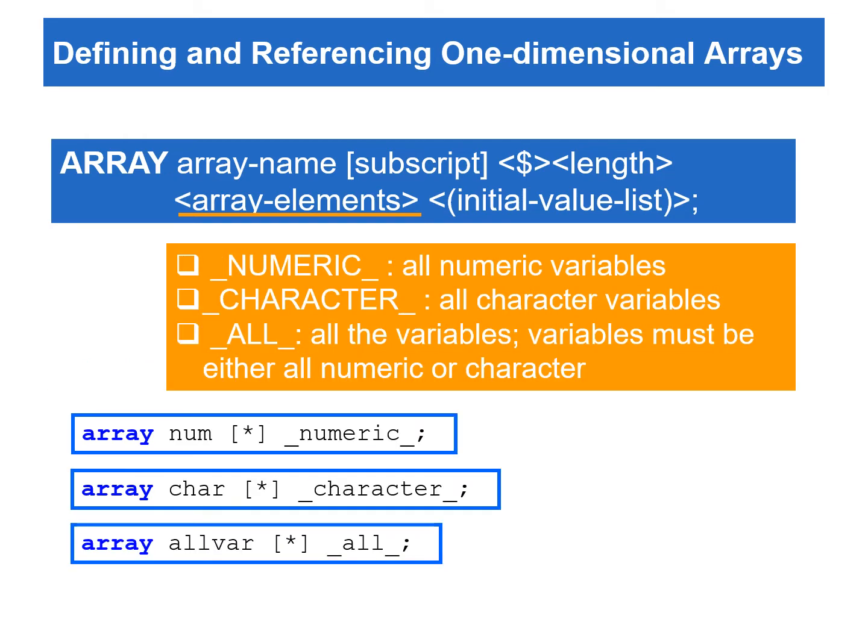Other ways to list array elements is to use the keywords _NUMERIC_, _CHARACTER_, and _ALL_, which are used to specify all numeric, all character, or all the variables. If the keyword _ALL_ is used, all the previously defined variables must have the same type.